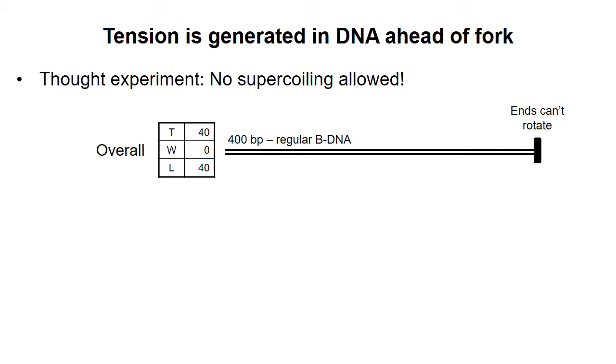If we assume this DNA is relaxed, then it's easy to assign values for twist, writhe, and linking number. The DNA is not supercoiled, so W equals zero. We can assume 10 base pairs per turn, so a 400 base pair section of DNA will have a twist of 40, and L also equals 40.